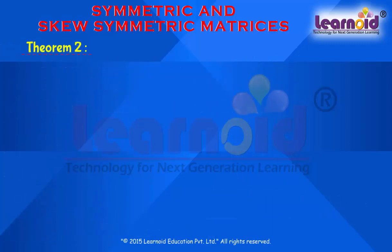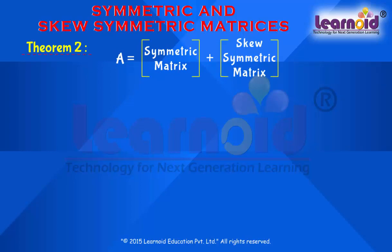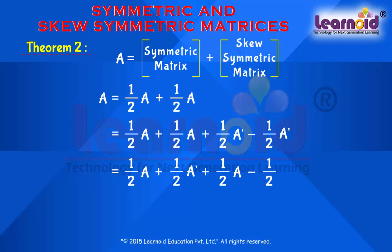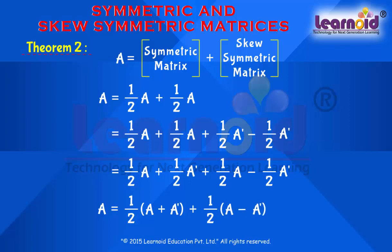Theorem 2: Any square matrix can be expressed as the sum of a symmetric and a skew symmetric matrix. To prove it, we write matrix A as half of A plus half of A, then add and subtract half of A transpose. Grouping together: A equals one-half of A plus A transpose, plus one-half of A minus A transpose. Here, half of A plus A transpose is a symmetric matrix, while half of A minus A transpose is a skew symmetric matrix.